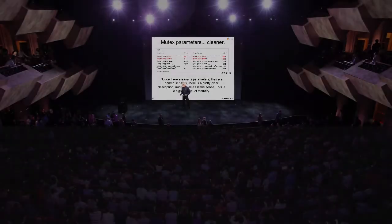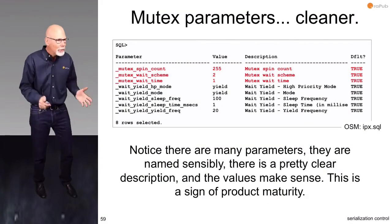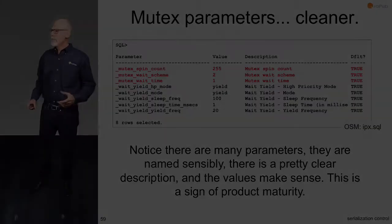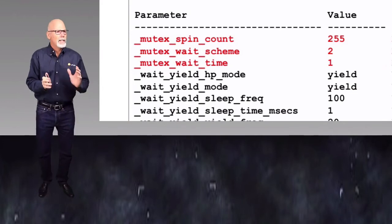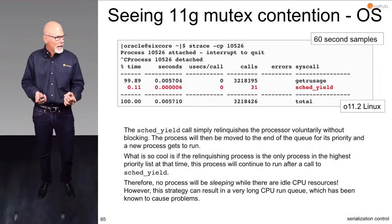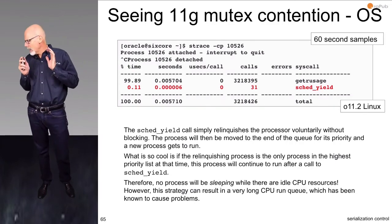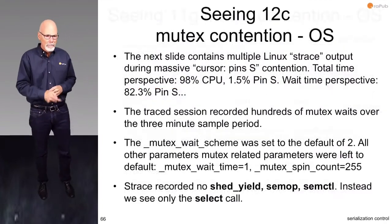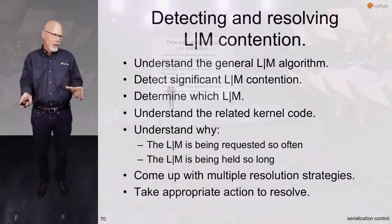Look at this slide about instance parameters available to us in 12c and later versions of 11g. The second thing I want to focus on is the wait scheme — this is really powerful. Through multiple wait schemes, which we can actually set, we control the system call used when the process tries to spin, can't get the mutex, and backs off by yielding the CPU. Let's look at an example from 12c.